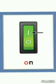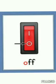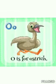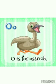O is for on. We switch off the lights when we go to sleep. O is for ostrich. An ostrich is a very large bird from Africa. It cannot fly, but it runs very fast.